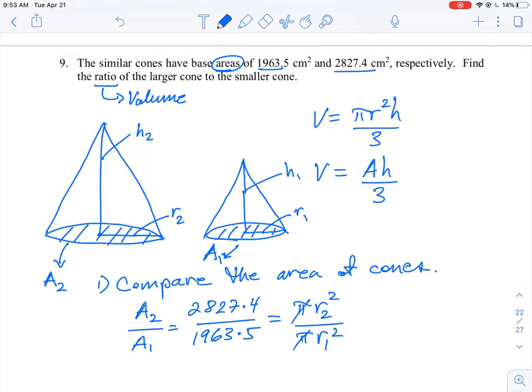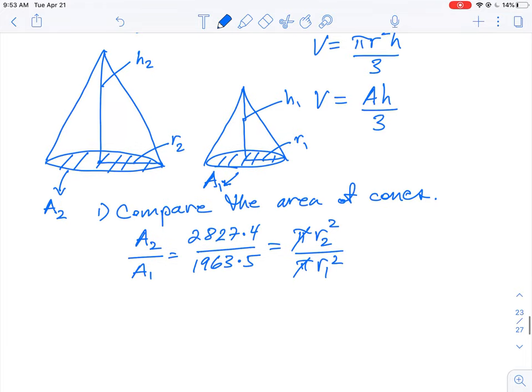So pi's will cancel out because those are constants. That produces an equation where we get the following. When we divide those two factors out, we're going to get 1.45 is equal to the radius 2 squared divided by the radius 1 squared.